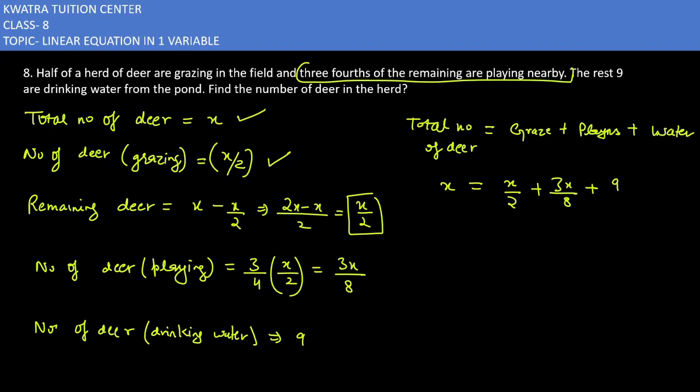Now what will our next step be? x by 2 goes left side and 3x by 8 goes left side. So x minus x by 2 minus 3x by 8, and the right side is 9. Now we will try to simplify it.